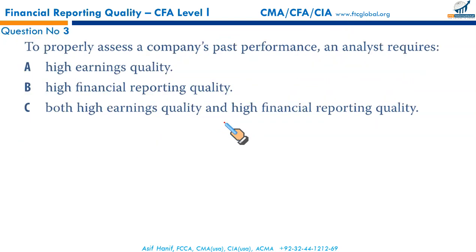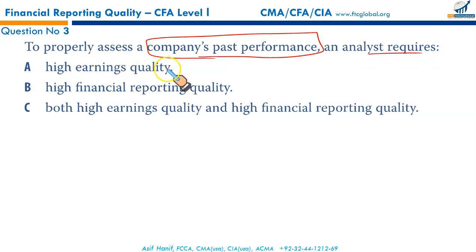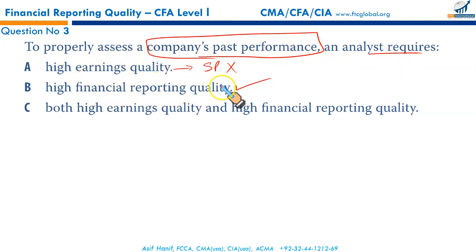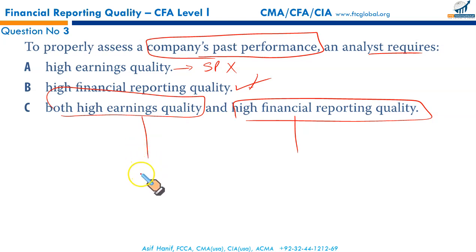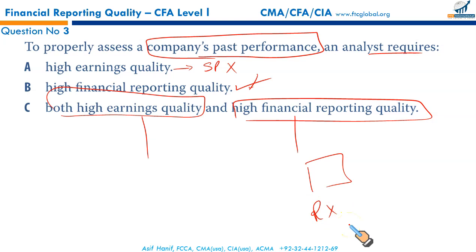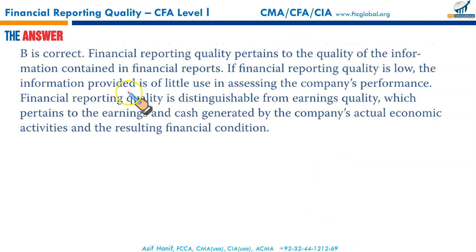C is the correct option. To properly assess a company's past performance, an analyst requires high financial reporting quality — this is what the analyst bases his analysis on. Financial reporting quality and earning quality are distinguishable: earning quality relates to the persistence and sustainability of earnings and affects firm value, while financial reporting quality pertains to the quality of information in the financial statement, meeting criteria of relevance and usefulness. B is the right answer.